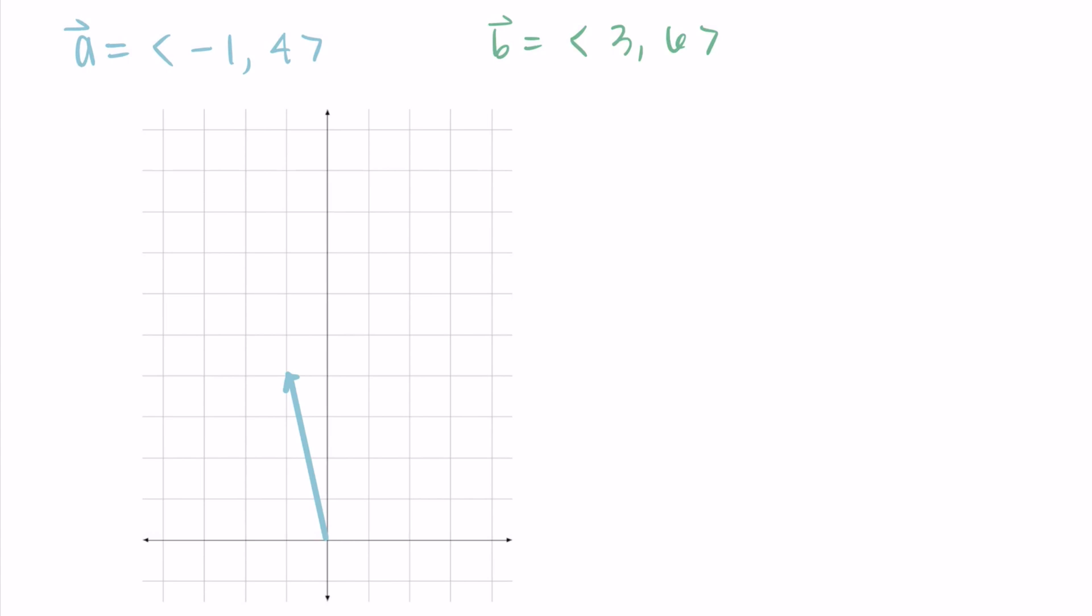Then for b, I'm starting at the tail of a, so the terminal point of a, and I'm going to do the b movement. The b movement is right by three, so that's three on the x, and then up by six. That's a positive six on the y.